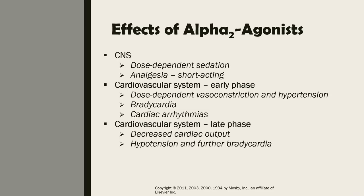What are the effects of alpha-2 agonists on different body systems? In the CNS, there is dose-dependent sedation, meaning that when we increase the dose of the drug, there is a greater sedative effect, though there is a dose range that we can use. There is also a time-dependent sedative effect — if we give more of the drug, the sedative effect will also last longer. In terms of the analgesic effect, it is short-acting.